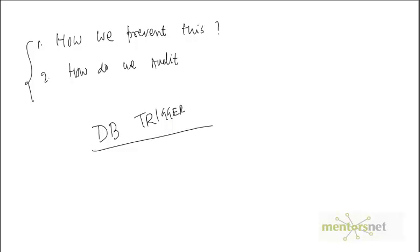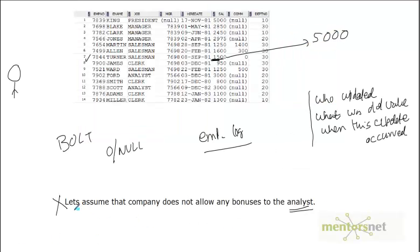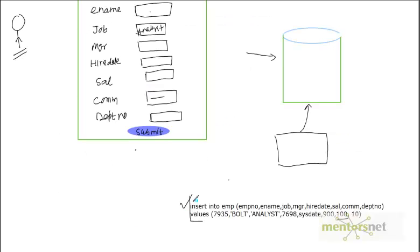Welcome back. In our last video we discussed how we are going to ensure that we cannot insert a certain row. You can't insert this row because the company has a business rule that they do not allow any commission for an employee whose job description is analyst. So here, we are inserting an employee named Bold who is an analyst, but he is getting a commission of 100.